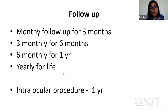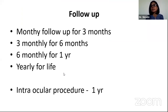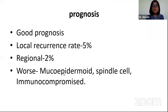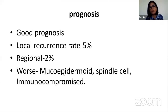Most cataract surgeons ask when we can do an intraocular procedure in these patients. It is recommended to wait for one year, or at least six months tumor-free, before considering intraocular procedures. OSSN has very good prognosis with a reported local recurrence of 5% and regional recurrence of 2%, but worst prognosis is in mucoepidermoid, spindle cell, and immunocompromised patients.